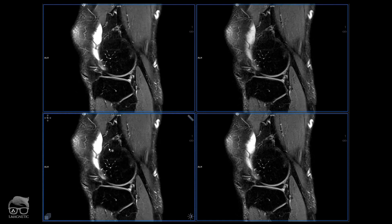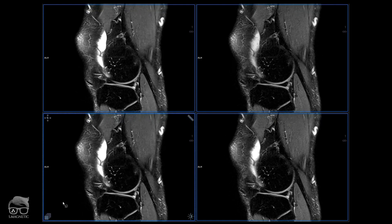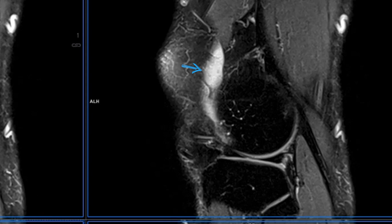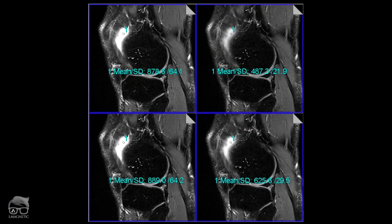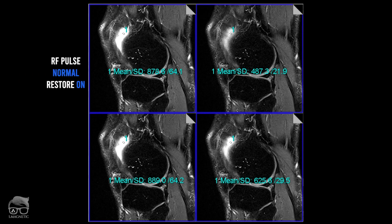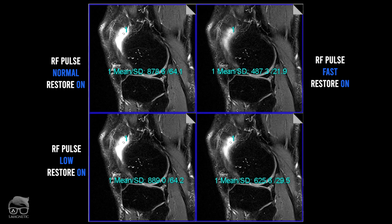Let's zoom in. Image one, two, three, four. Number two looks a little bit different in signal intensity. Let's do some measurements. The first one is RF pulse normal with restore pulse on. The second image is RF pulse fast, restore pulse on. The third image is RF pulse low, restore pulse on. And the fourth image is RF pulse fast, but restore pulse is off. Take a look at the values.